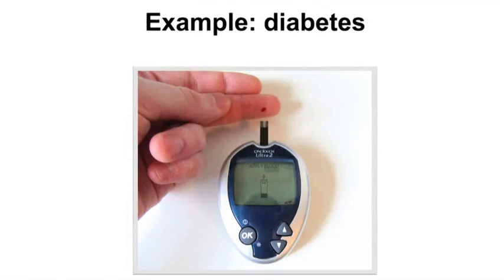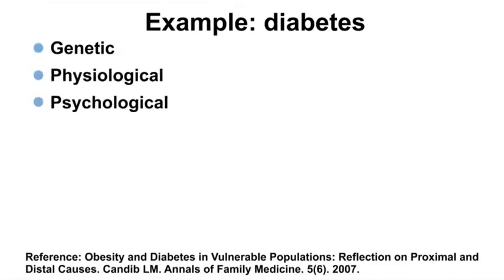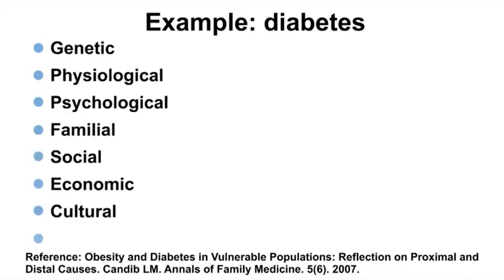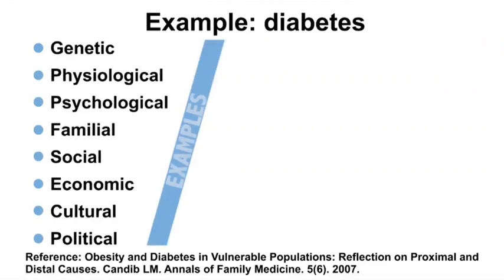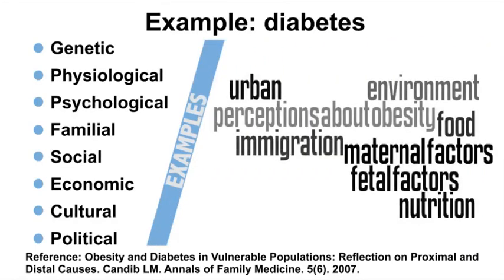Now we will discuss a different disease example: diabetes. The cause of diabetes may have genetic, physiological, psychological, familial, social, economic, cultural, and political aspects. Events during fetal development and maternal factors may influence whether someone gets diabetes later in life. Genetic factors play a role. Social factors such as nutritional change to higher calorie and higher fat foods, urbanization, immigration, and cultural perceptions of what it means to be overweight or obese may have an effect. Economic factors such as changes in the cost or availability of food in certain areas may also play a role in the development of diabetes.